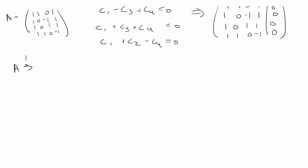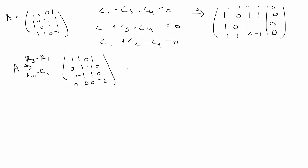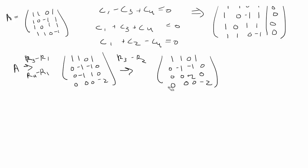Applying row operations R₂−R₁, R₃−R₁, and R₄−R₁, we get the reduced matrix. We can stop here because this is already in row echelon form, and we see there are no zero rows. So we can conclude that the system has only the trivial solution, meaning B is linearly independent.